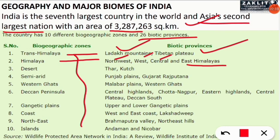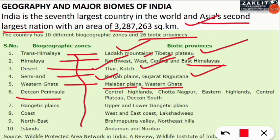The desert zone covers the Thar Desert and the Kutch — that is the Rann of Kutch. The semi-arid zone includes Punjab Plains and the Gujarat-Rajputana region. The Western Ghats covers the Malabar Plains and Western Ghats. The Deccan Peninsula has the most biotic provinces: Central Highlands, Chhota Nagpur, Eastern Highlands, Central Plateau, and Deccan South.